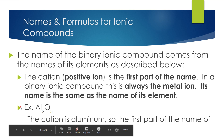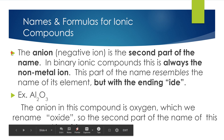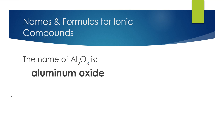For example, Al₂O₃: the cation is aluminum, so the first part of the name of this compound is aluminum. The anion, or negative ion, is the second part of the name. In binary ionic compounds, this is always the non-metal ion. This part of the name resembles the name of its element but with the ending -IDE. For Al₂O₃, the anion is oxygen, which we rename oxide. So the second part of the name is oxide, making the full name aluminum oxide.